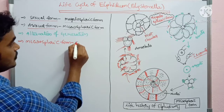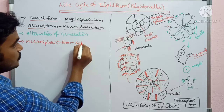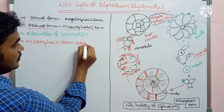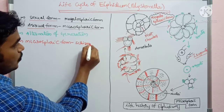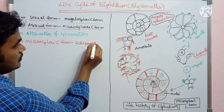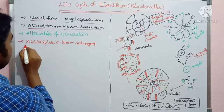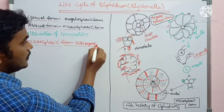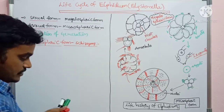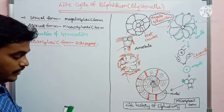The asexual reproduction performed here is a type called schizogony. This schizogony form is a key feature of the asexual phase.